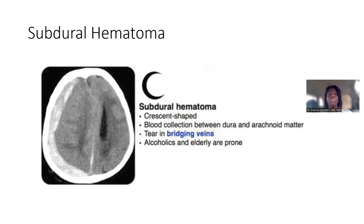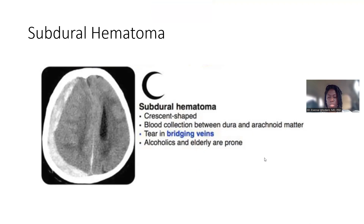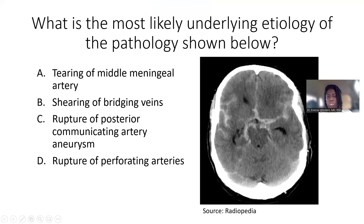The next bleed is subdural hematoma. The difference between epidural and subdural hematoma on imaging is that the subdural hematoma is crescent-shaped — kind of like the moon. The underlying etiology is the bridging veins. High yield: know what a subdural hematoma looks like on CT scan — crescent-shaped — and that the underlying etiology is the bridging veins. Going back to the question, this image does not look crescent-shaped, so it's not a subdural hematoma, ruling out option B.